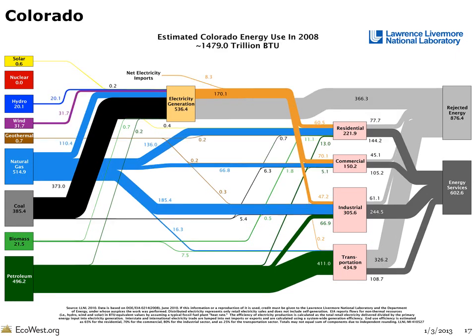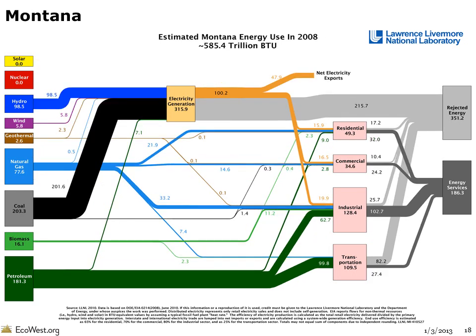Colorado is heavily dependent on coal, but natural gas is also critical, and about 6% of electricity generation comes from wind — a higher fraction than any other western state. Montana also uses lots of coal, but hydropower makes up nearly one-third of the power portfolio.